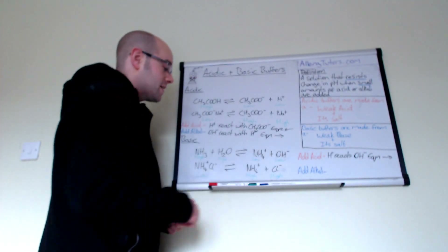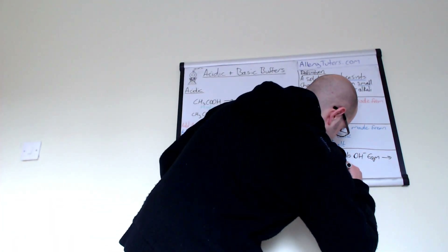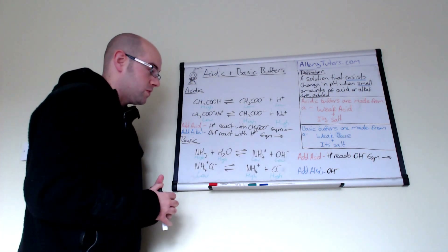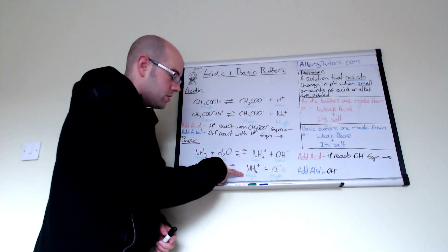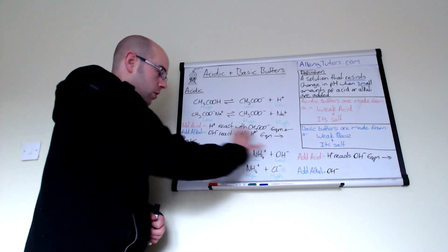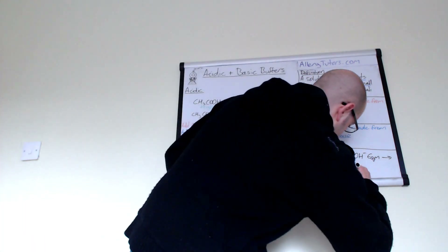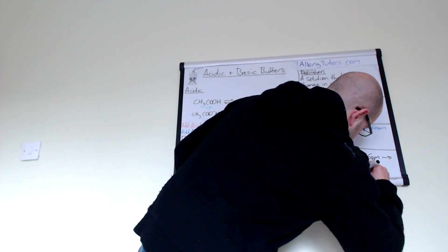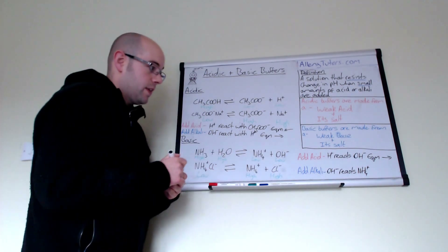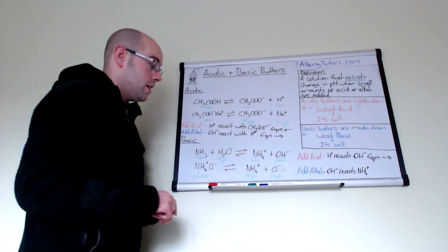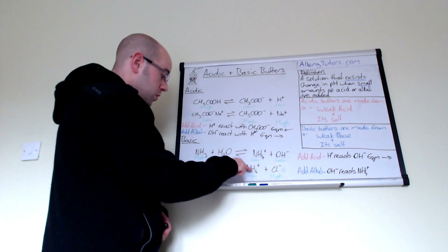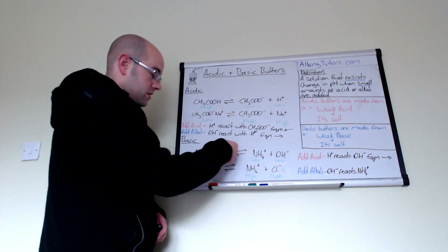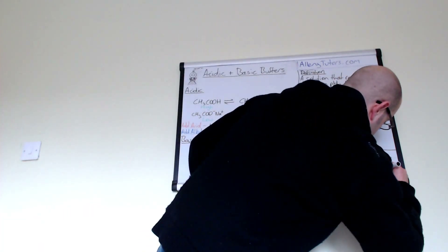When you add alkali — OH- — it will react with something that's positively charged. The only positively charged species we have is ammonium ions, and we have high amounts of those. So the OH- reacts with NH4+. When it does, you form NH3 and H2O, so the reaction goes back to the left side of the top equation. According to Le Chatelier's principle, equilibrium shifts to the left to oppose that change.